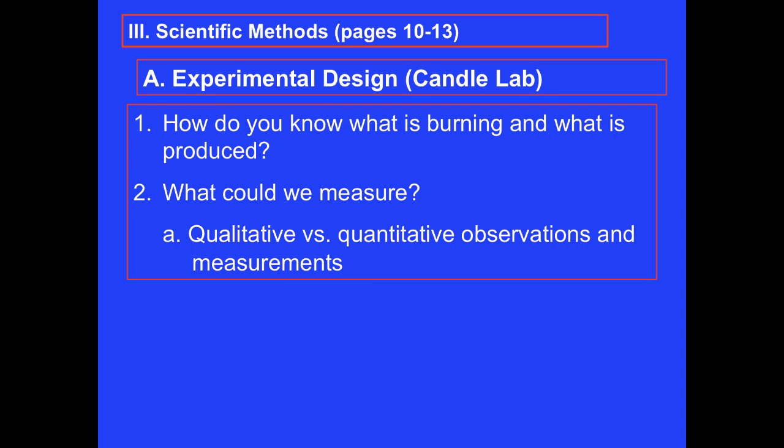Scientists begin to answer scientific questions by designing an experiment. We will use the candle lab as an example. In this lab, which we will be doing in class, we explore the process of a candle burning. Our objective is to determine what is actually burning when the candle is lit, and what compounds are being produced from the burning process. One of the first things we need to decide when designing the experiment is what we want to measure—what qualitative and quantitative observations we want to make.